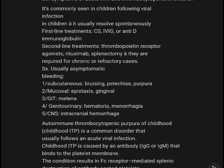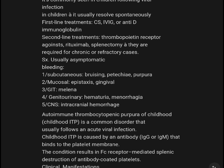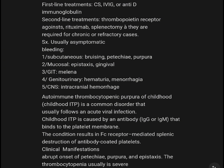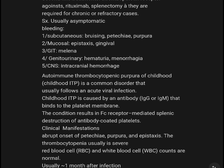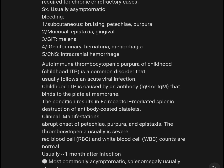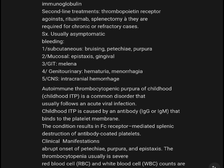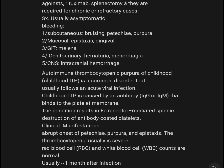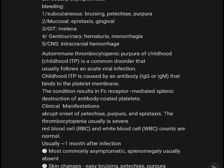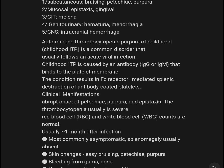Bleeding manifestations include subcutaneous bruising, petechiae, purpura, epistaxis, gingival bleeding, GI melena, genitourinary hemorrhage, menorrhagia, CNS involvement, and intracranial hemorrhage. Severe thrombocytopenia is characteristic of childhood ITP.